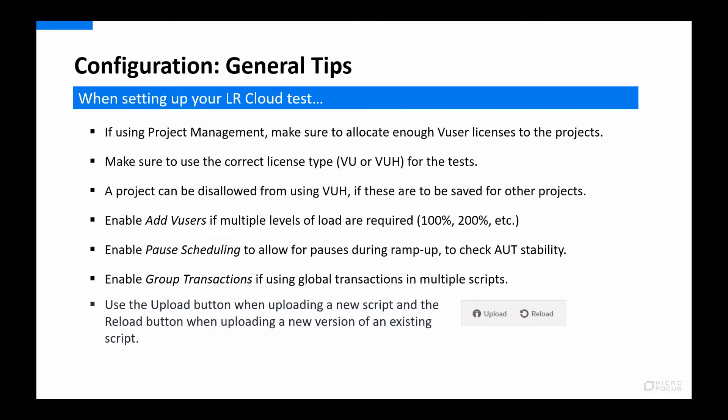If multiple levels of load are required, the 'Add Virtual Users' functionality can be used to literally add more virtual users once the preset ramp-up has finished. An alternative is to use the pause scheduling feature to make regular pauses during the ramp-up. These two features are enabled on the general tab of the test. If you are using global transactions — meaning transactions with the same name in different scripts — the group transactions feature can be enabled in the settings. Finally, when uploading a script for the first time use the upload button; for a new version of an existing script, use the reload button, otherwise the script will be uploaded under a new name.